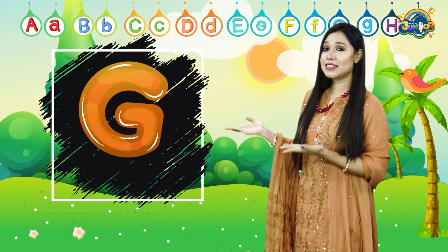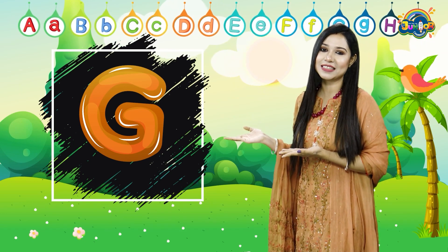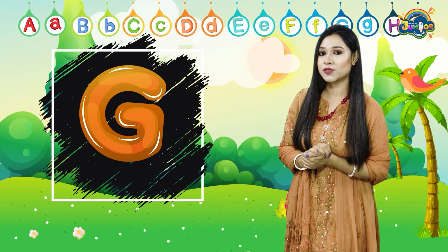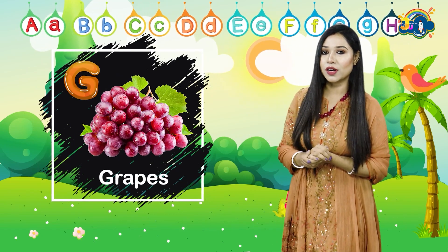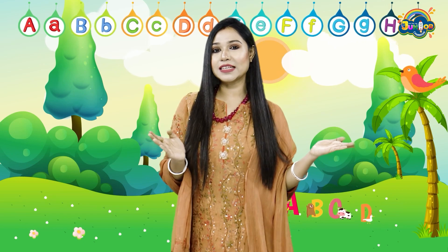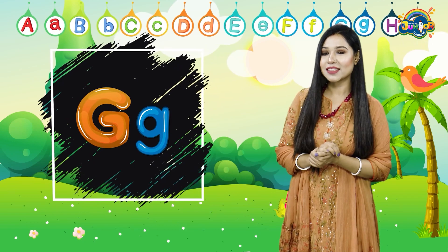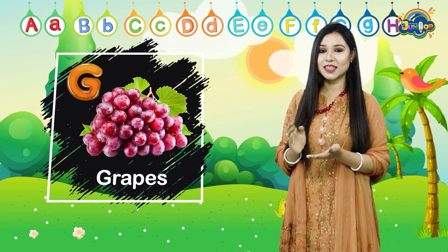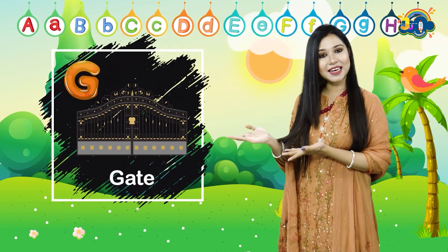Next letter is G. What's the letter? It's G. G for what? G for grapes. G for gate. Now we'll be making the sound of G. What's the sound of G? It's G. G, G, grapes. G, G, gate.